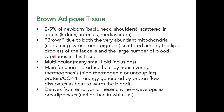Because there are many small lipid inclusions in brown adipose tissue, it is termed multilocular. Its main function is to produce heat by thermogenesis, which occurs due to thermogenin or uncoupling protein UCP1, which produces heat by proton flow. The energy generated during proton flow dissipates as heat and warms the blood.